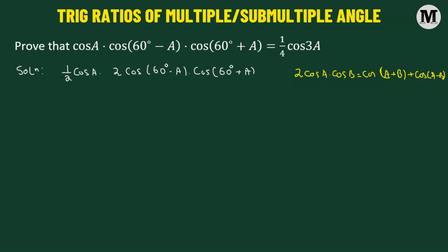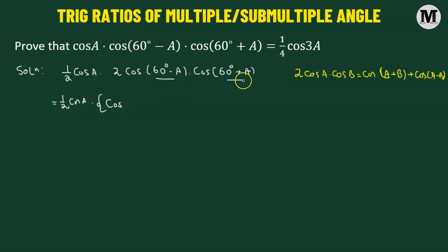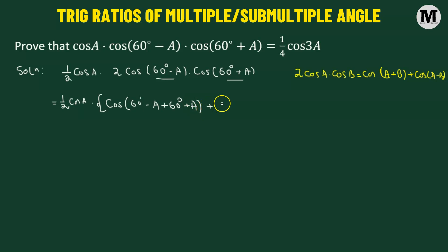Let's use this particular formula. We will get half multiplied by cosine of angle A. Here we suppose this corresponds to angle A and this corresponds to angle B, and we're going to add them: so we have (60° minus A) added to (60° plus A), and also cosine of (60° minus A) minus (60° plus A), which gives us negative 60° minus A.